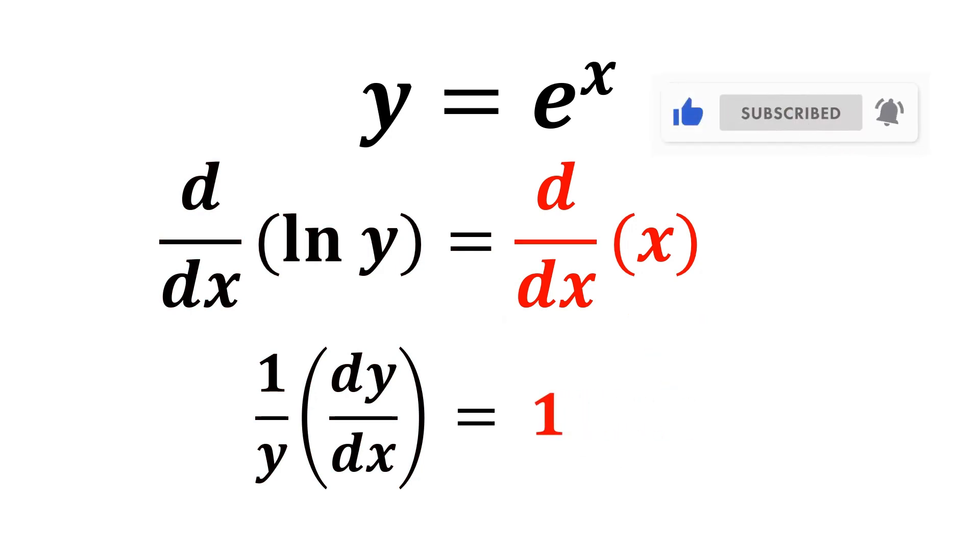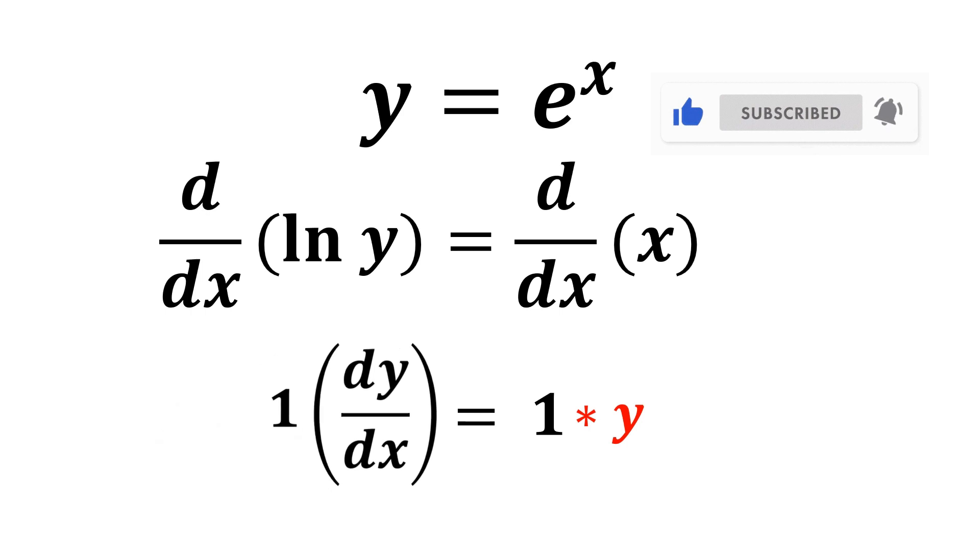All we have to do now is to solve for dy dx. Multiply both sides by y so that we can cancel it out on the left-hand side. And we only left with dy dx, which is equal to y.